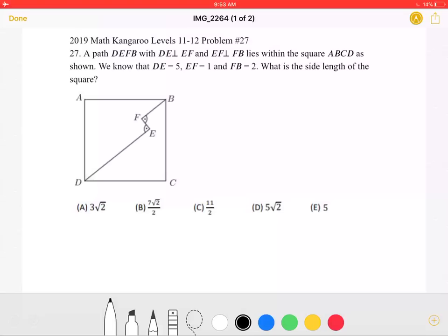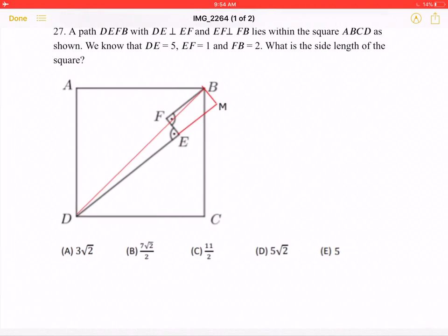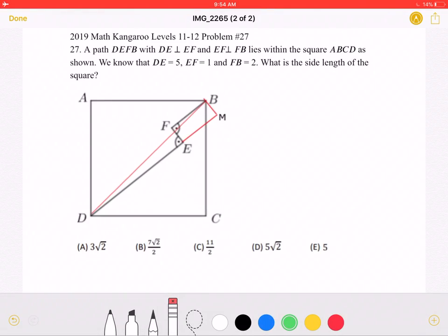We know that DE is equal to 5, EF is equal to 1, and FB is equal to 2. What is the side length of the square? This is the problem as it originally appeared on the test, and here is where we will be doing the solution.